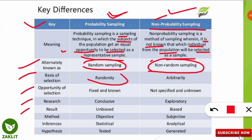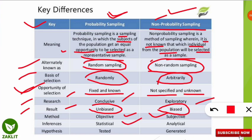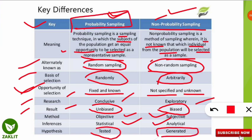In probability sampling, the basis of selection is random; in non-probability sampling it is arbitrary. The opportunity of selection is fixed and known in probability sampling, and not specified and unknown in non-probability sampling. Research is conclusive in probability sampling and exploratory in non-probability sampling. Results are unbiased in probability sampling and biased in non-probability sampling. Methods are objective in probability sampling and subjective in non-probability sampling. Inferences are statistical vs. analytical, and hypothesis is tested vs. generated respectively.